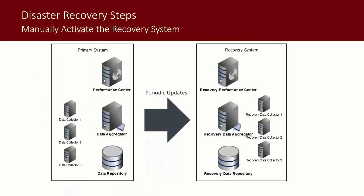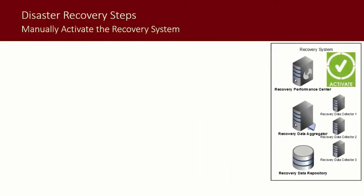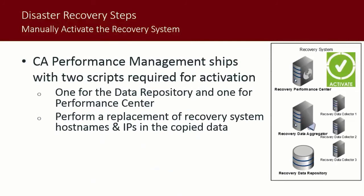In the event of a catastrophe at the primary site, the final step in disaster recovery is manual activation of the recovery system. Because periodic updates have kept the data content of the recovery system in sync with the primary system to within the bounds of the update period, the manual activation process can begin immediately after the primary system has become inoperable. Activation of the recovery system hosts requires the running of two scripts — one for the data repository and the other for performance center.